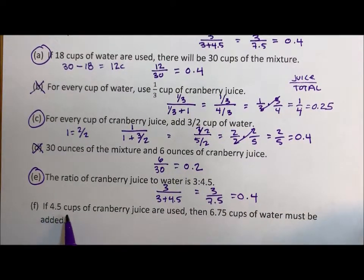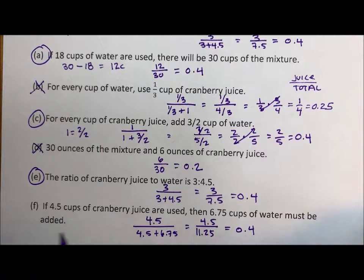And then for our last one, if 4.5 cups of cranberry juice are used then 6.75 cups of water must be added. Okay so cranberry juice is 4.5, water is 6.75, so that's 4.5 over 11.25 which is 0.4.